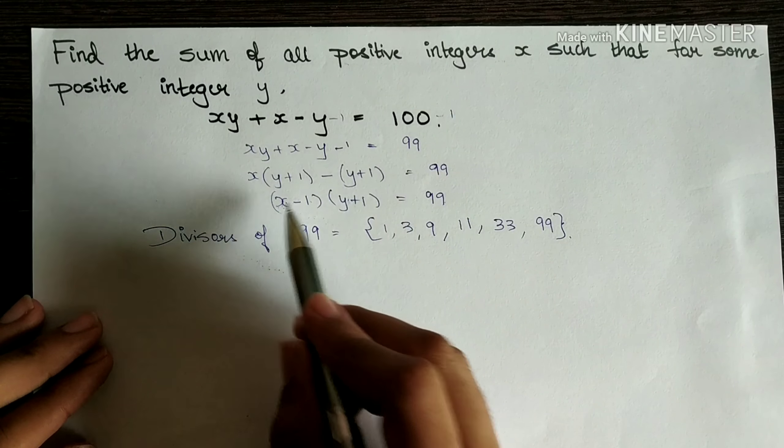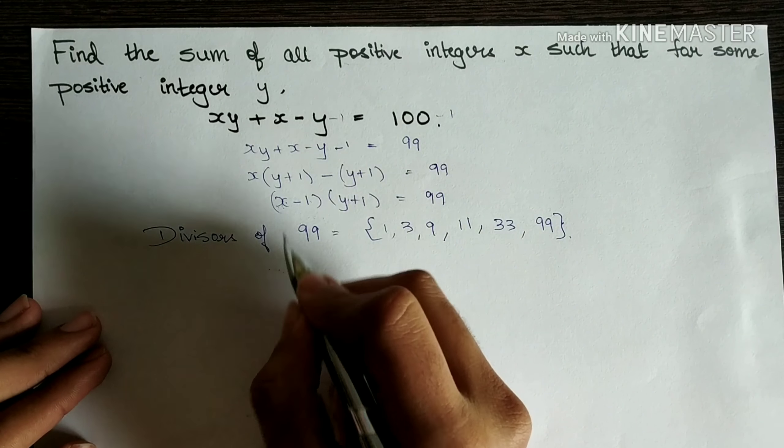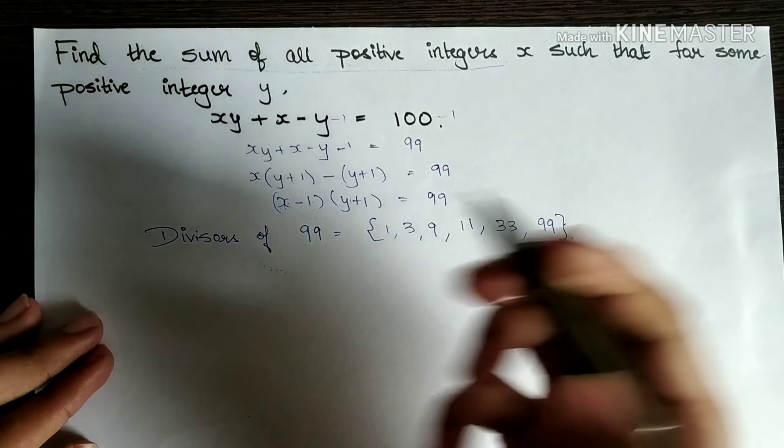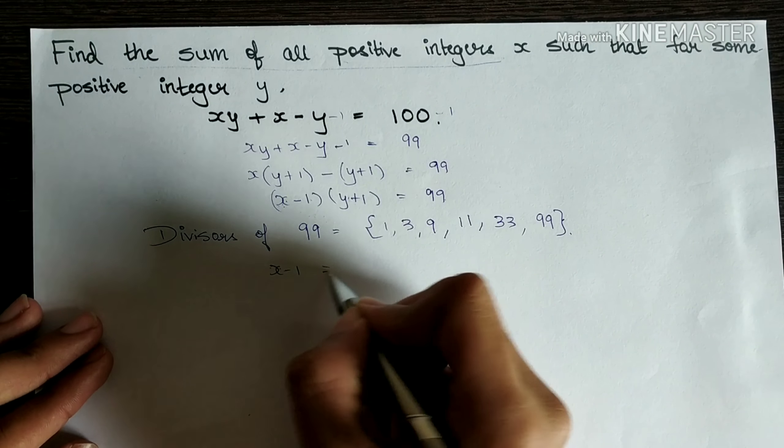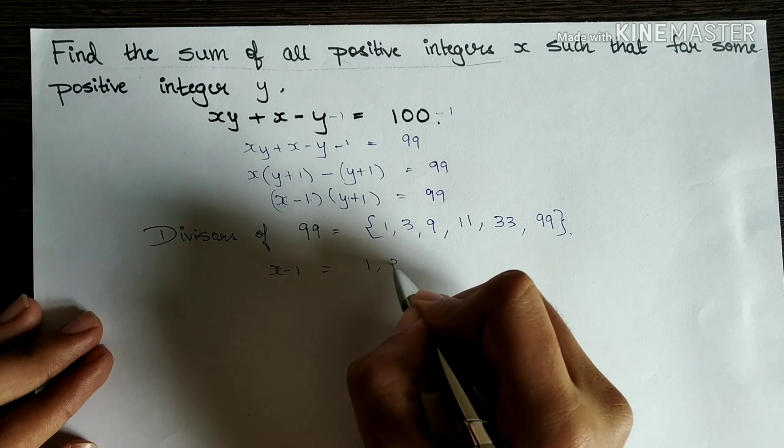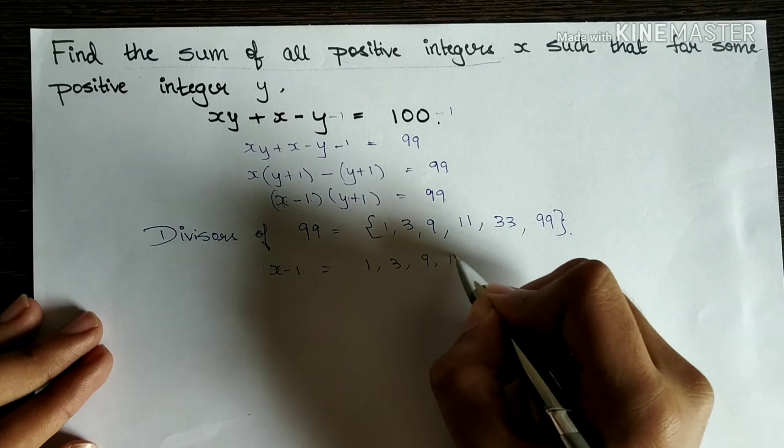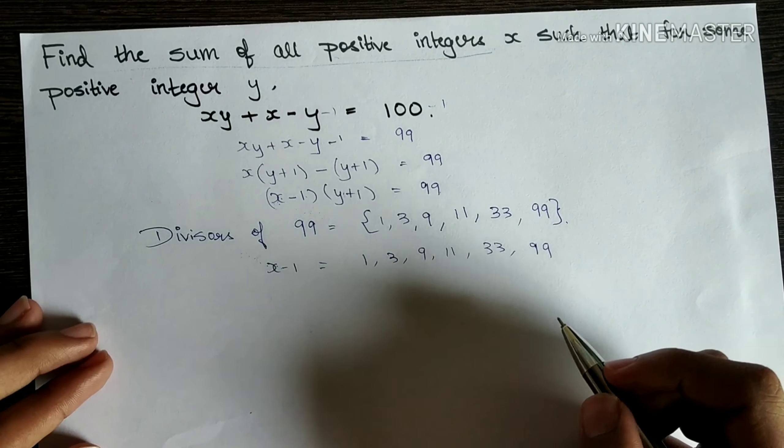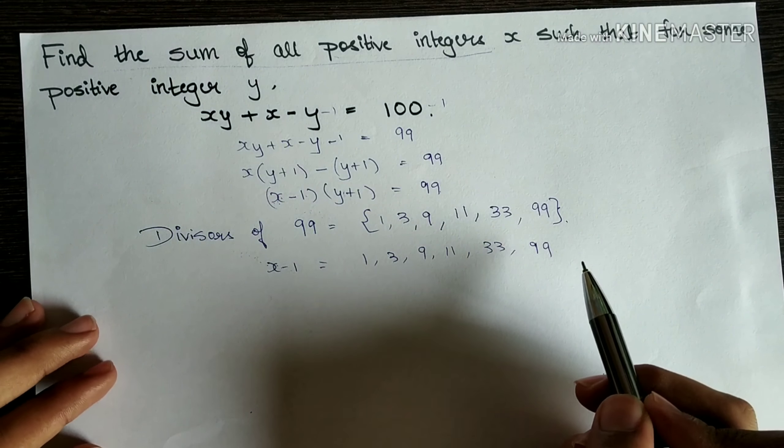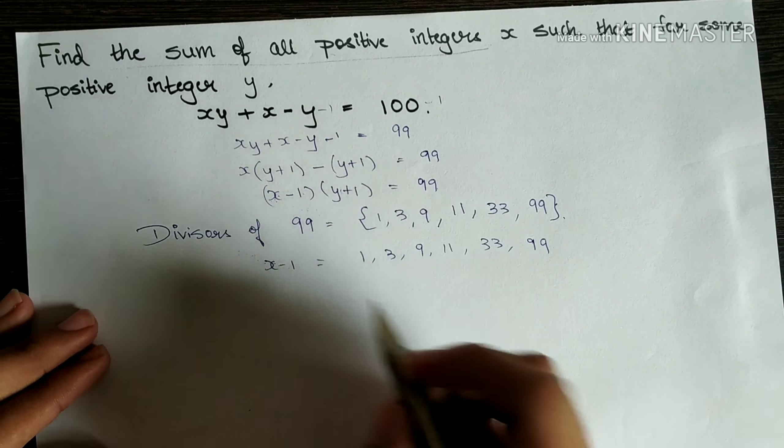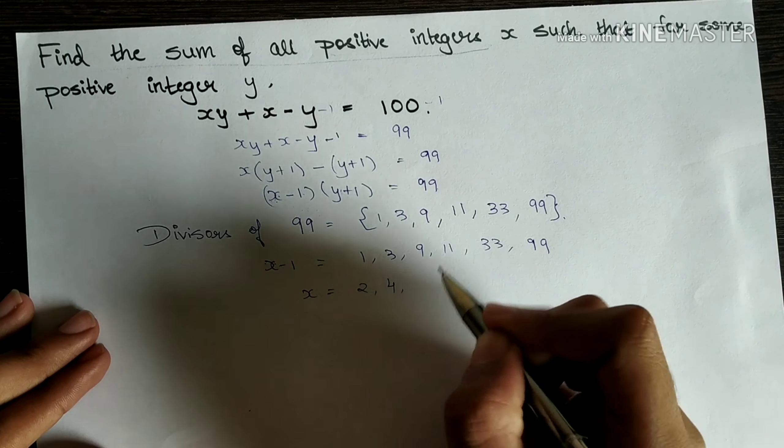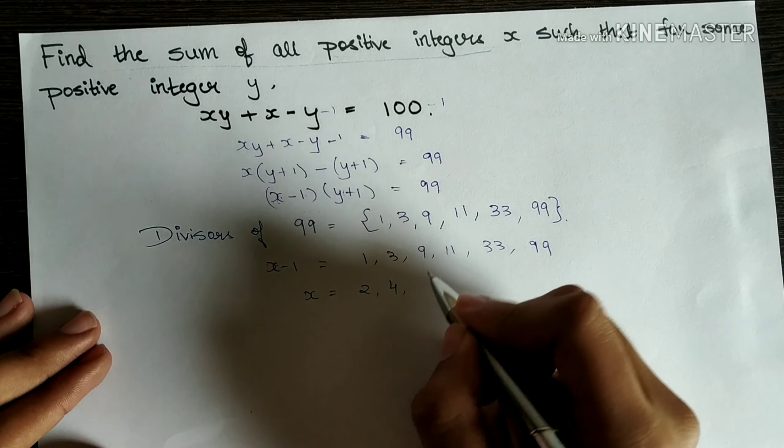Now I can equate any one of them. That is, let's take x minus 1 because we need sum of positive integers x. So I can equate x minus 1 equal to 1, 3, 9, 11, 33, 99. If x minus 1 is equal to all these values, then x has to be 2, 4, I need to add 1 for everything, 10, 12, 34, and 100.